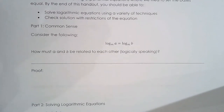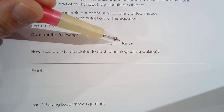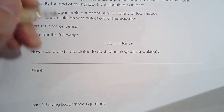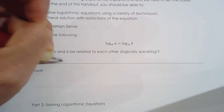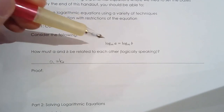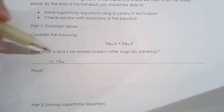Before we solve logarithmic equations, we're going to look at this relationship: log base M of A is equal to log base M of B. Try not to think too hard, but what is the relationship between A and B? Hopefully you say A equals B — they're the same because the bases of the logarithm are the same, so the arguments must be the same. This is very similar to what we said about powers: if the bases of the exponents are the same, then the exponents must be the same.